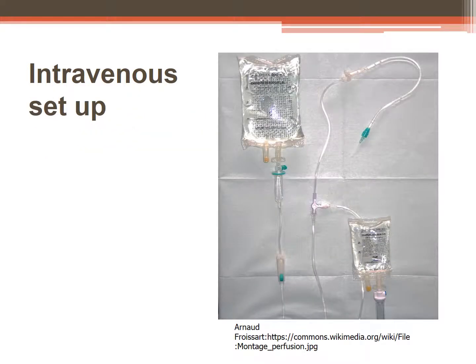Here is a picture of an IV setup. You can see the IV solution bag and the spike where the tubing goes into the bag. There is an injection port where medications can be injected into the bag, then the drip chamber, the flow regulator clamp, and the tubing. Towards the end there is a filter and then the IV catheter that goes into the patient's vein. Midway, you'll see that an IV piggyback is hooked in, which allows for a secondary medication to be given to the patient.